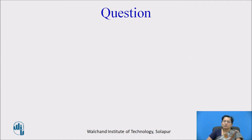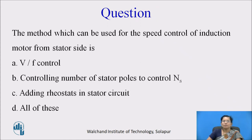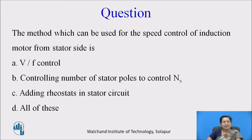Pause the video and think about this question: Which method can be used for speed control of an induction motor from the stator side? A — V by F control. B — controlling number of stator poles to control synchronous speed. C — adding a rheostat in the stator circuit. D — all of these. The answer is D, all of these.